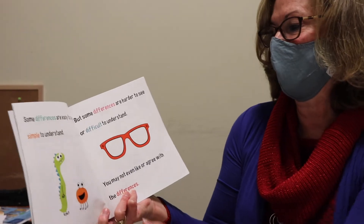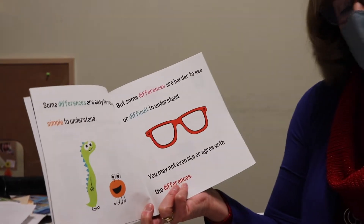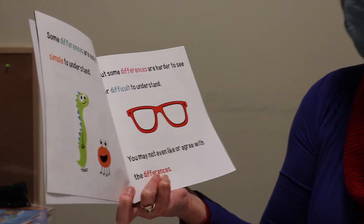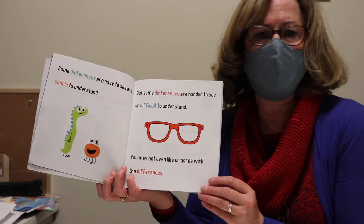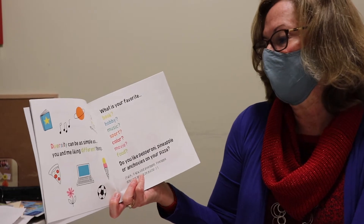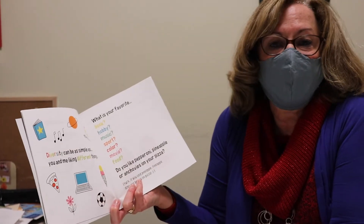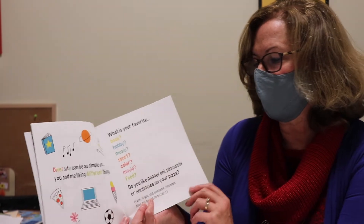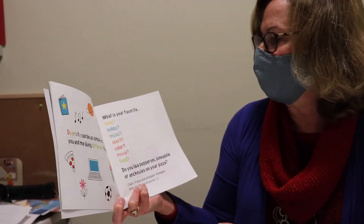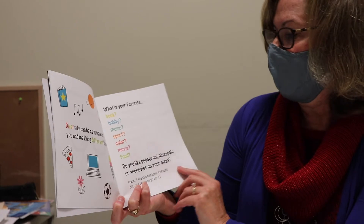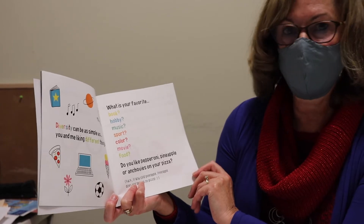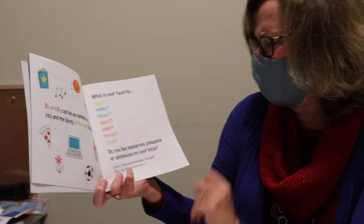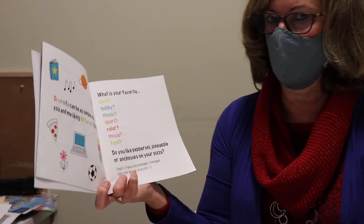Some differences are easy to see and simple to understand. But some differences are harder to see or difficult to understand. You may not even like or agree with the differences. Diversity can be as simple as you and me liking different things — hobbies, food, sports, nature. What is your favorite book? Hobby, music, sport, color, movie, or food? Do you like pepperoni, pineapple, or anchovies on your pizza?